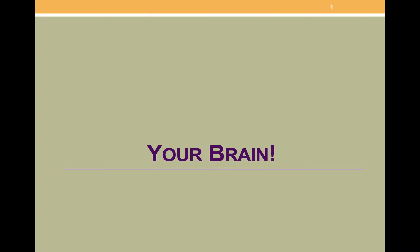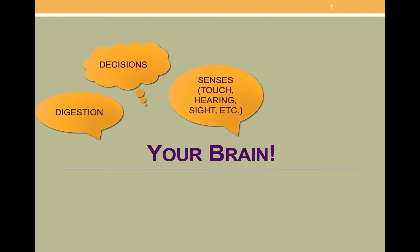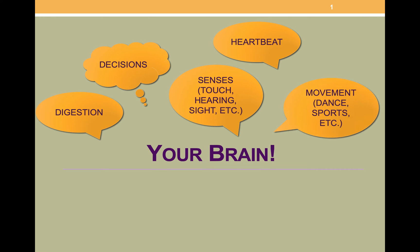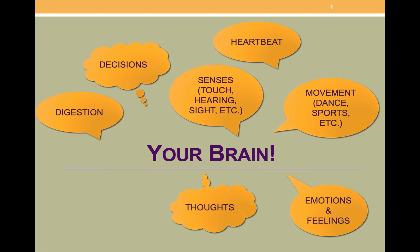Your nervous system is the basis for all sensation and action — everything you think, feel, and do. Some examples are perhaps counterintuitive things like digestion, your decisions, your senses (hearing, touch, sight, smell, taste), your heartbeat, your actions and movements like dance, sports, walking, and talking, your thoughts, your emotions and feelings. All of these are a product of the functioning of nerve cells.